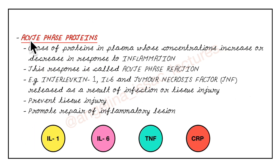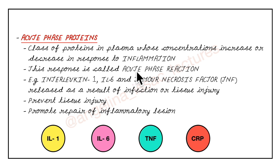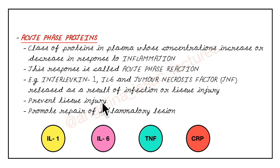There are proteins in our plasma collectively called acute phase proteins, and there may be a sudden increase in their plasma concentration as a response to infection or tissue injury — this is called the acute phase reaction. Examples of these acute phase proteins are interleukin-1, interleukin-6, tumor necrosis factor, and C-reactive proteins. They help prevent tissue injury and promote repair of inflammatory lesions.